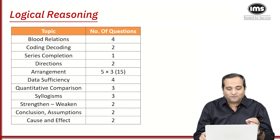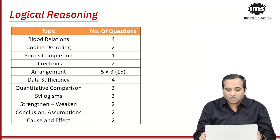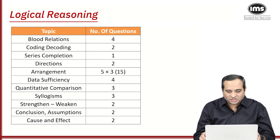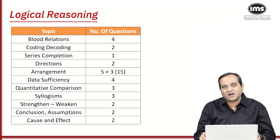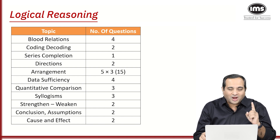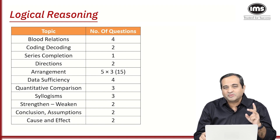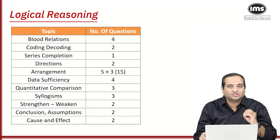So if you check: you get four questions on blood relations, a couple of questions on coding-decoding, one question on series completion, and two questions on directions. You get 15 questions on arrangement — there are various kinds. You get three sets: one on linear arrangement, one on circular arrangement, and one on matrix arrangement, with five questions in each set.